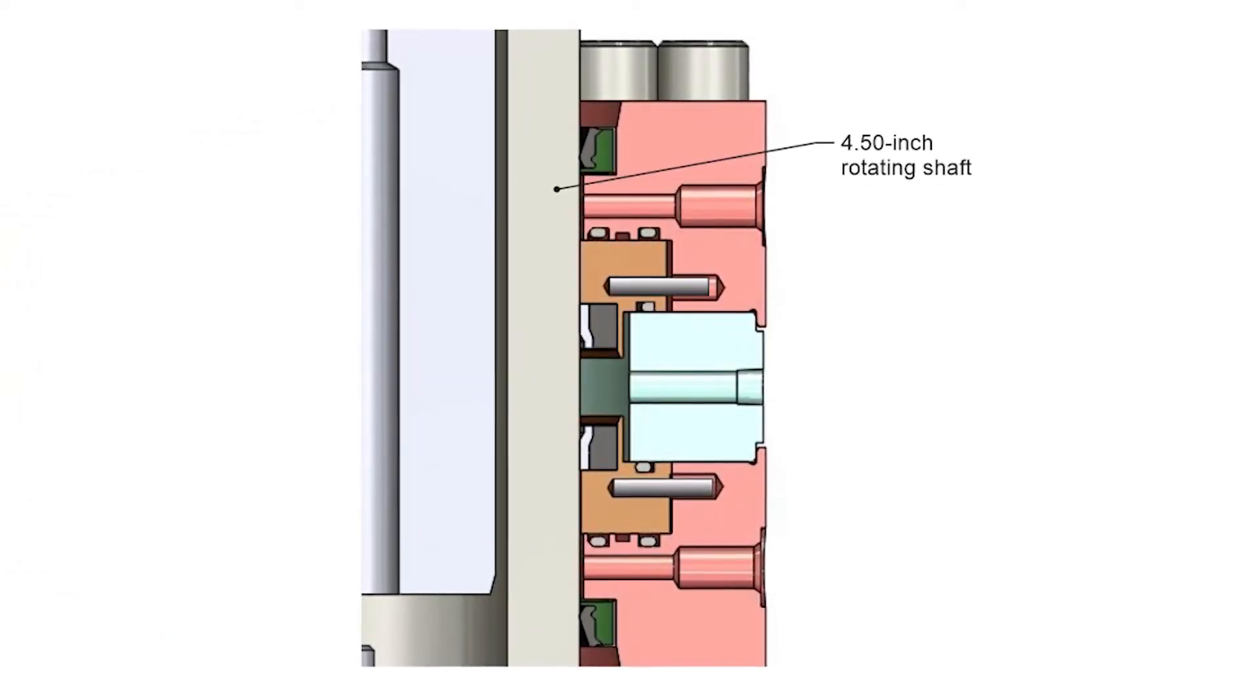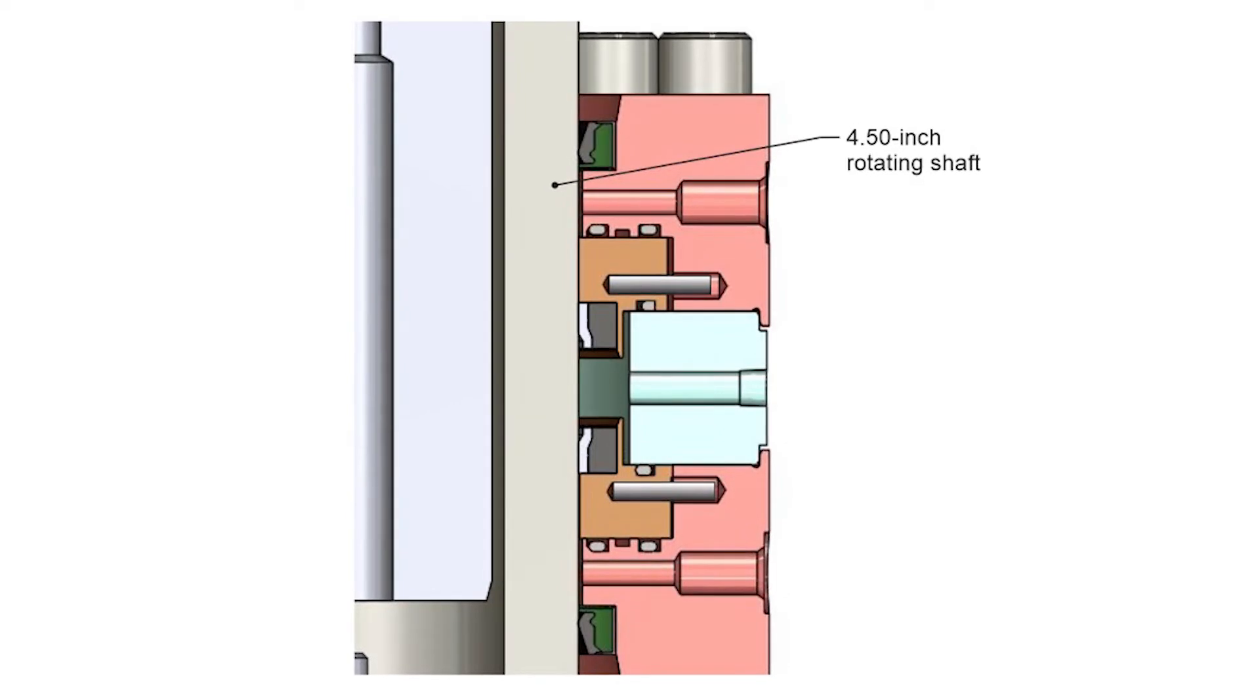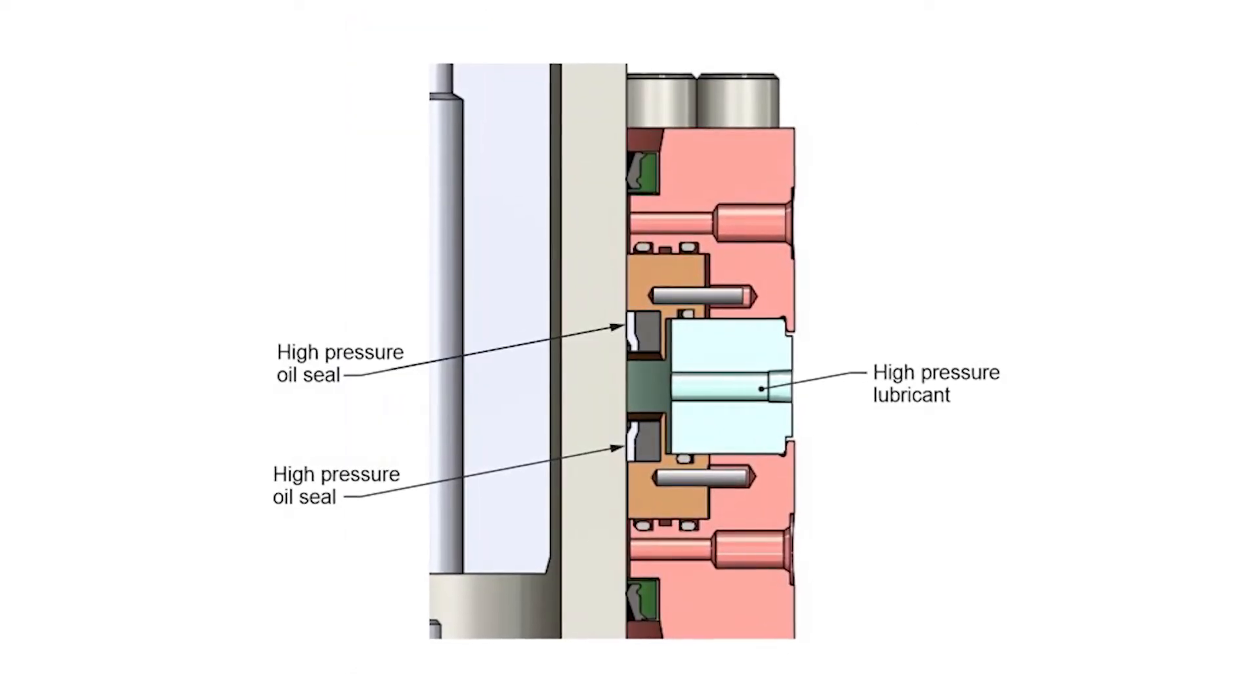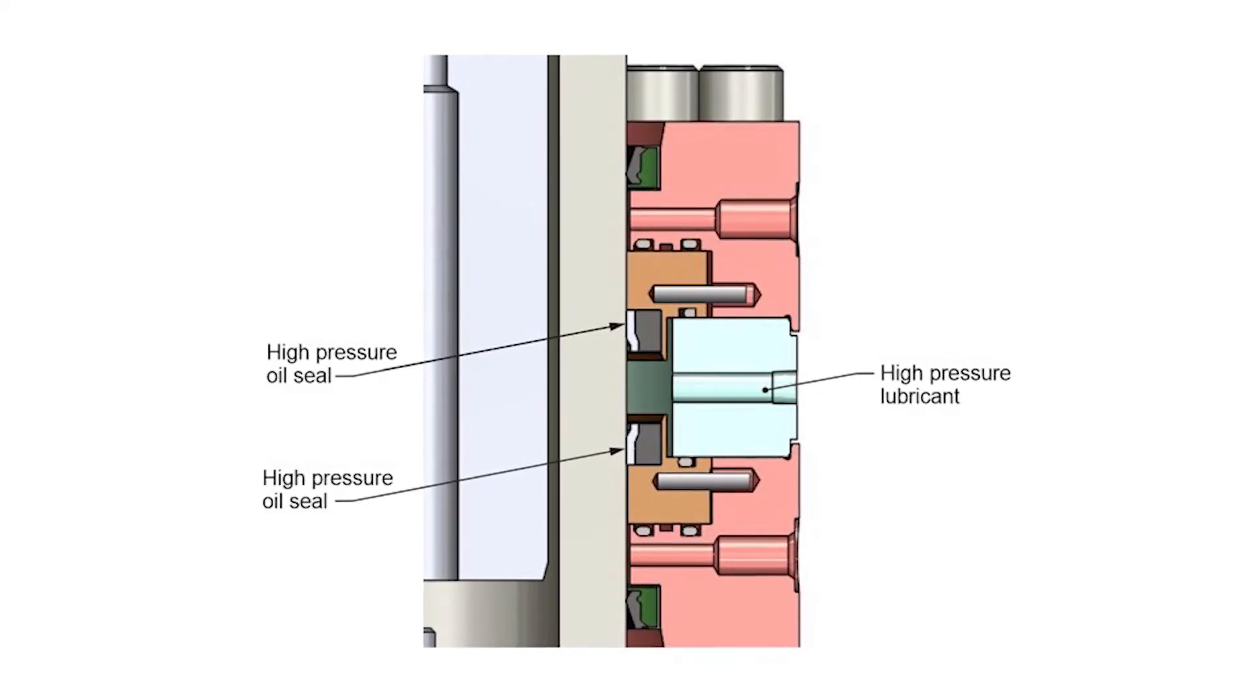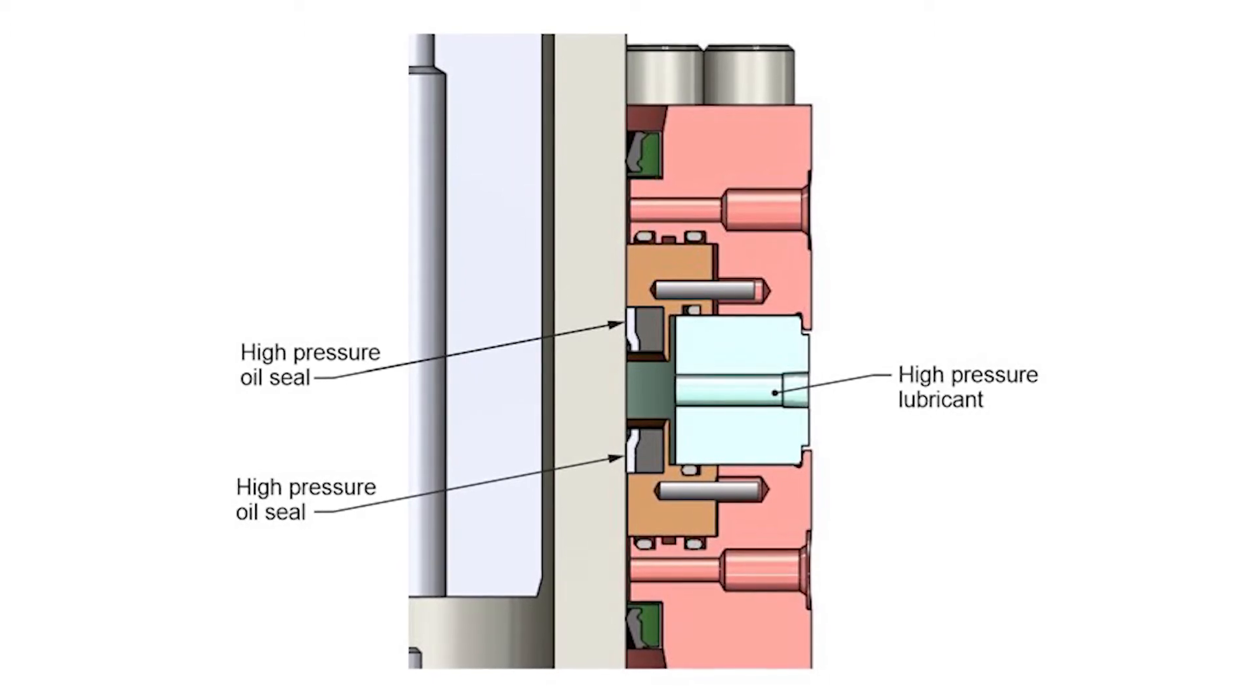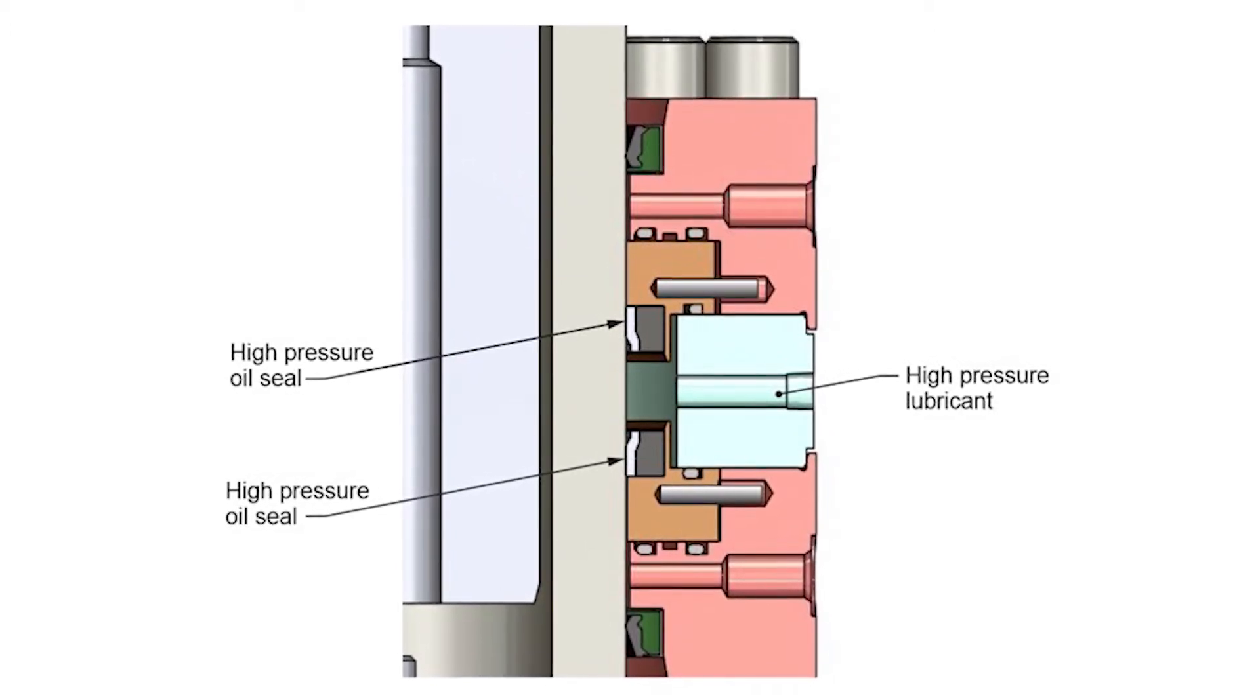This is a cross-section of the test fixture. The center of the shaft is at the left edge. A pair of seals were tested to eliminate hydraulic thrust on the fixture bearings. The lubricant between the seals was maintained at 9,500 to 9,800 PSI.